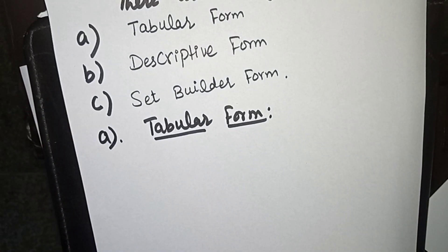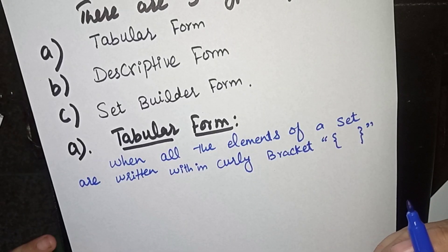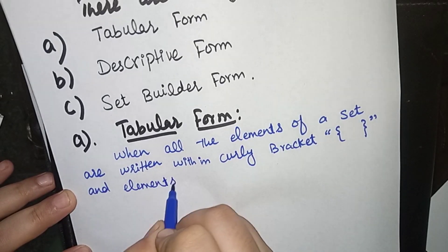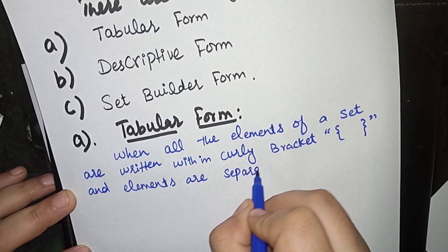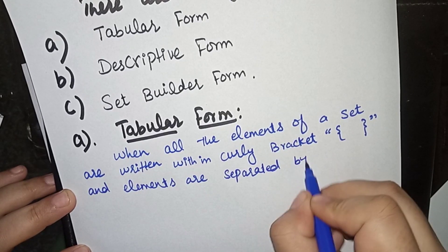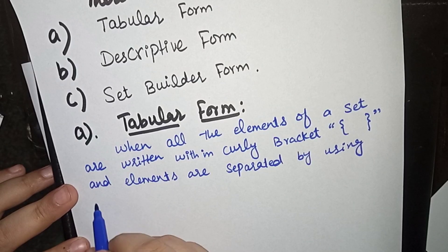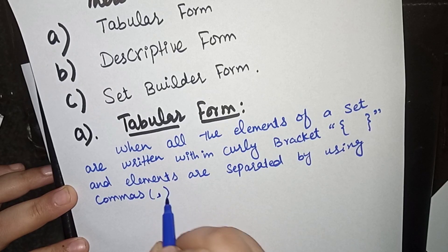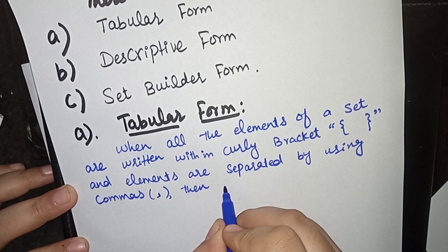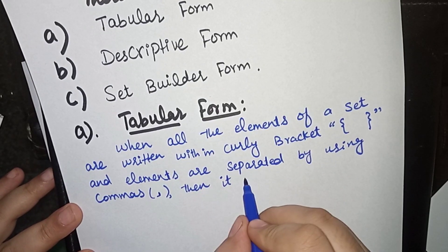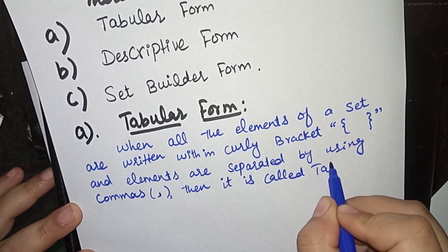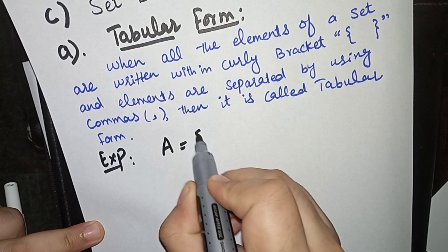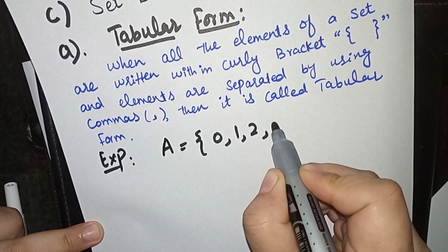The first form is tabular form. First I will give the definition and then explain using examples. Tabular form is a form in which all the elements of a set are written within curly brackets — denoted by this sign — and elements are separated by commas. In the set, we start with a curly bracket, list all elements separated by commas, and close with a second curly bracket.